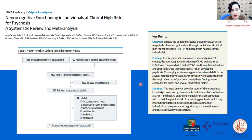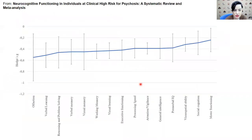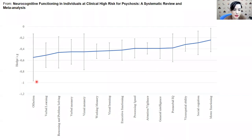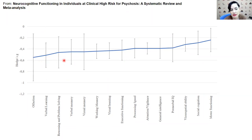We performed a meta-analysis, published in JAMA Psychiatry last year, to analyze characteristics in neurocognitive domains in these individuals. As we expected, clinical high-risk for psychosis subjects showed important deterioration in all the neurocognitive domains studied — verbal learning, verbal memory, visual memory, and so on. The values are below zero compared to healthy controls, meaning they presented important impairments across all these domains.